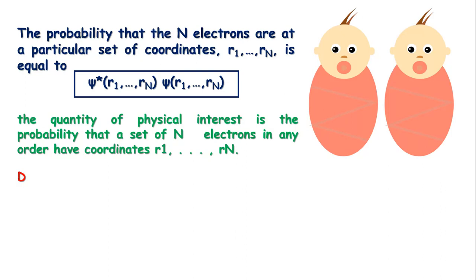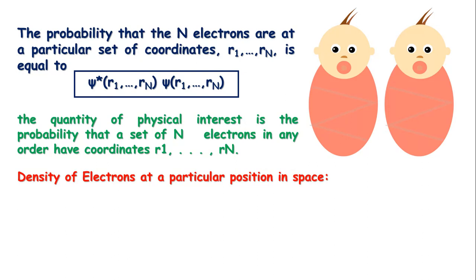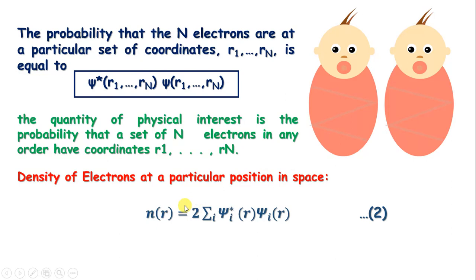The density of electrons at a particular position in space is given by n = 2 × Σ ψi* ψi, where the factor of two comes because of electron spin.